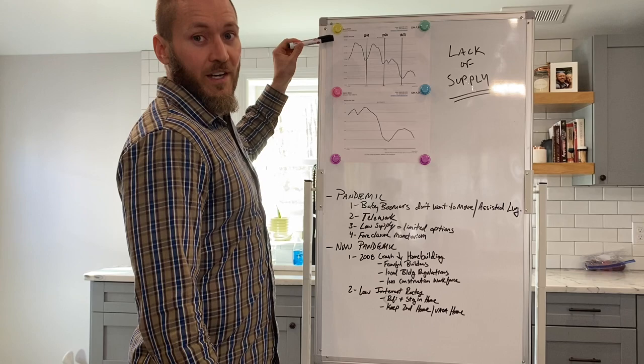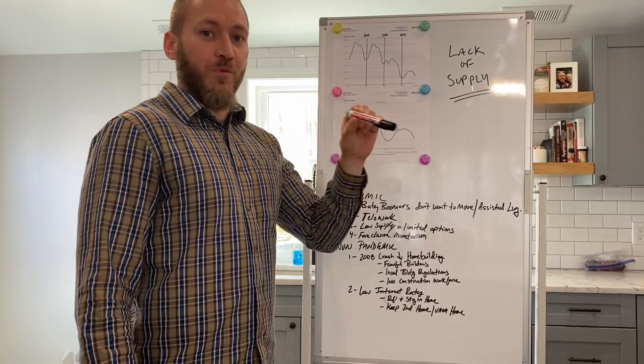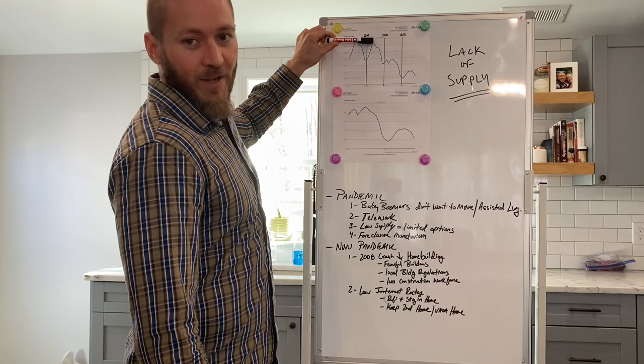This is a four-year chart showing homes for sale in the entire state of Connecticut. As you can see, even before COVID, before the pandemic, we were on a slight downward trend of less houses being listed for sale each year.